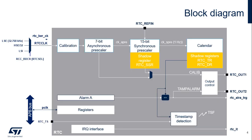Here's the RTC block diagram. The RTC has two clock sources: the RTC clock, or RTCCLK, used for the RTC timer counter, and the APB clock, used for RTC register read and write accesses. The RTC clock can use either the high-speed external oscillator, or HSE, divided by 32, the low-speed external oscillator, or LSE, or the low-speed internal oscillator, or LSI. The RTC clock is first divided by a 7-bit programmable asynchronous prescaler, which provides the CKA_PRE clock. Most of the RTC is clocked at the CKA_PRE frequency, so to reduce power consumption, it is recommended to set a high asynchronous division value. The default value is 128.